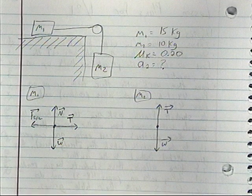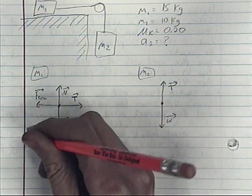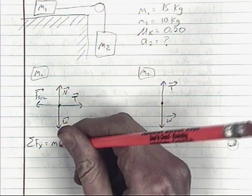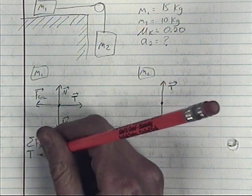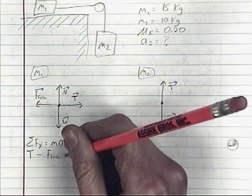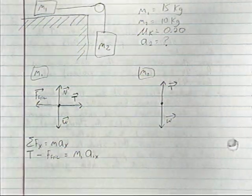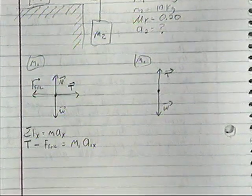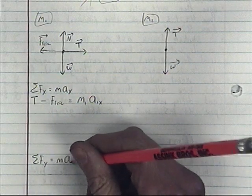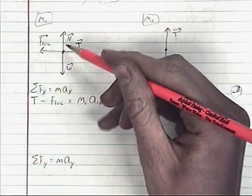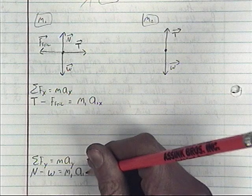After drawing free body diagrams, the next step is to write Newton's second law equations. For mass one, we handle x and y directions separately. In the x direction: tension to the right minus friction to the left equals mass one times acceleration in x. In the y direction: normal force upward minus weight force downward equals mass one times acceleration in y.